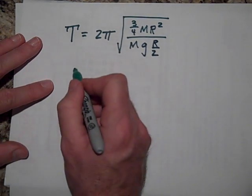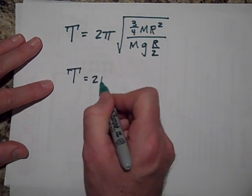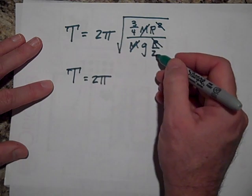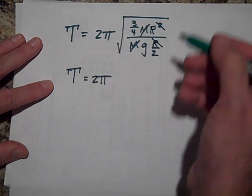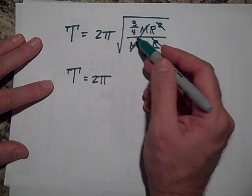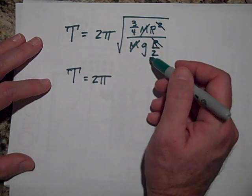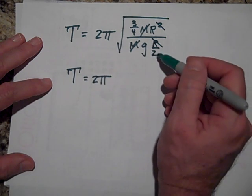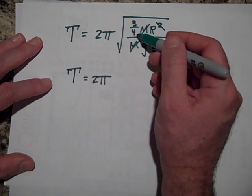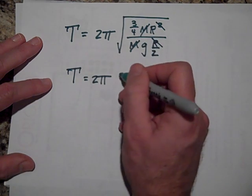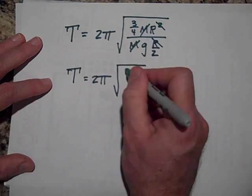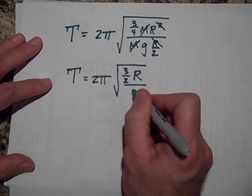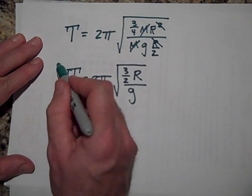So the period of this thing is going to be 2π. Let's see, the masses cancel. One of the R's cancels. That 2 can come all the way up to the top, and that's going to give me 6 over 4. So that's going to give me 6 over 4. So that's 3 halves. I'm saying that's what the period will be.